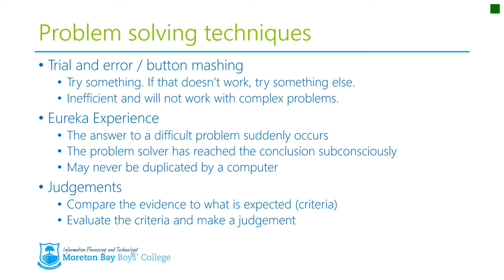Now let's look at some problem-solving techniques. There are five that we're going to look at. The first one is good old trial and error — or if you're doing console gaming, it might just be called button mashing — where you just keep trying something. You try it, does it work? No, try something else. It's inefficient and it definitely doesn't work with complex problems. You definitely wouldn't want to try to create rockets or a nuclear weapon this way. But for some simple problems where there isn't a wide range of possibilities, it can be pretty effective.